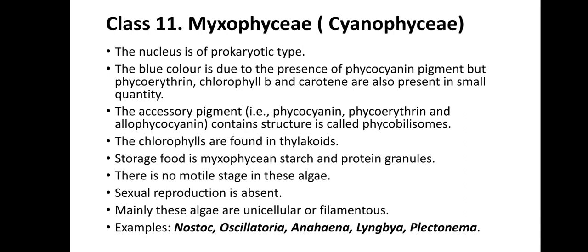Class 11 is Myxophyceae or Cyanophyceae. They are mainly prokaryotic algae and the blue color is due to the presence of phycocyanin. Phycoerythrin, chlorophyll B, and carotene are also present in very small quantities. Accessory pigments like phycoerythrin, phycocyanin, and allophycocyanins are also present, collectively known as phycobilisomes. Chlorophylls are found in thylakoids. Storage food material is myxophycean starch or cyanophycean starch and protein granules. There is no motile stage, and sexual reproduction is totally absent. These algae are mainly unicellular or filamentous. For example, Nostoc, Oscillatoria, Anabaena, Lyngbya, and Plectonema.